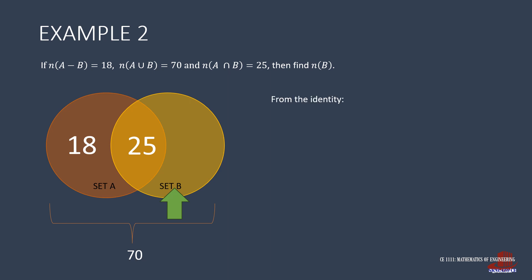Using an identity, we take n(A ∪ B) as equal to the number of elements of A minus B, plus the number of elements in their intersection, plus the number of elements in B minus A. n(A - B) is 18, and the number of elements of the union is 70, with the intersection as 25. Place them all in the identity to have 70 as 18 plus 25 with n(B - A). Transpose the constants to just one side, and take the number of elements of B minus A as 27.